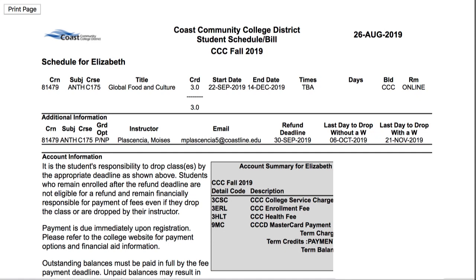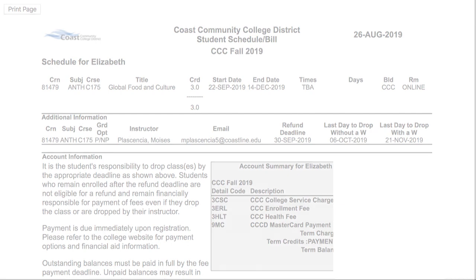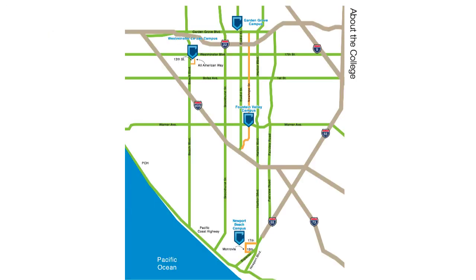In this case I'm only taking a class online, so it's just showing my class schedule online. But if you were taking a class at one of our campuses, it will tell you where that class is and the room number. Just one note: we have three campuses at Coastline — Newport Beach, the Le Jiao Westminster campus, and Garden Grove — so make sure you go to the right campus for your class.